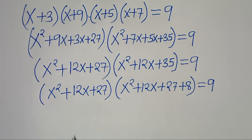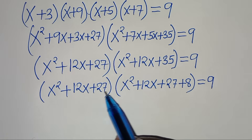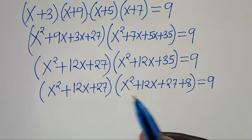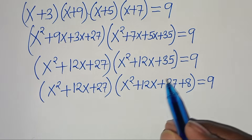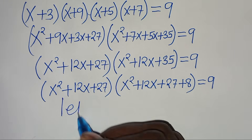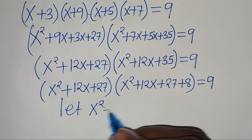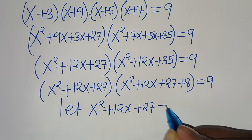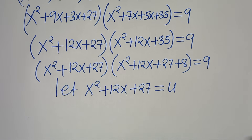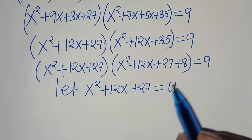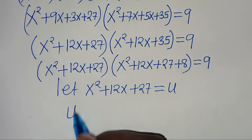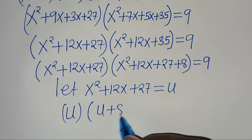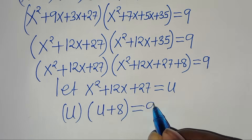Since x² + 12x + 27 appears in both factors, we let u = x² + 12x + 27. Substituting back into the equation, we get u multiplied by (u + 8) equals 9.